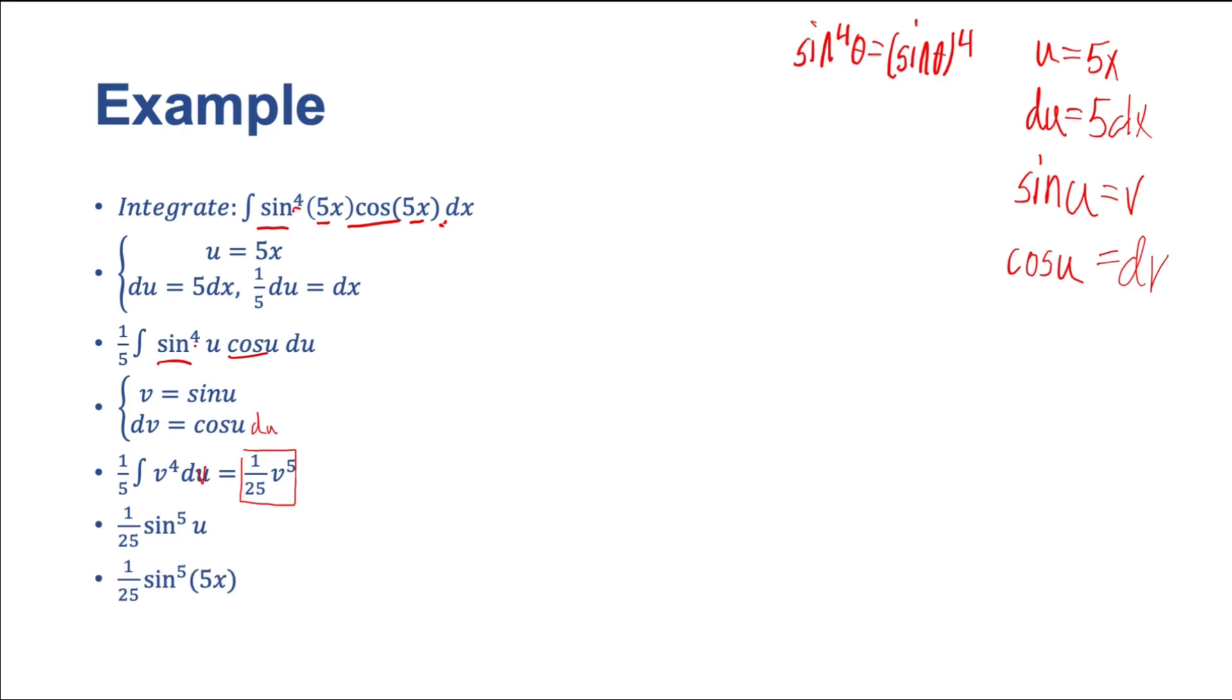Now we just need to back substitute in for x. That's easy as well. That's just adding in the arguments. That gives us 1/25 sin^5(5x). Of course, what would a proper substitution answer be without a constant of integration? Always add that plus C.